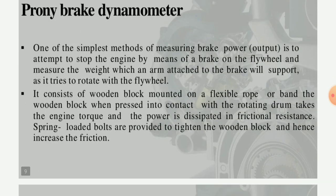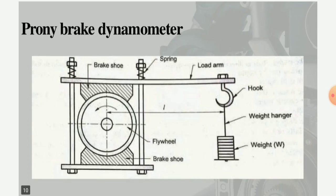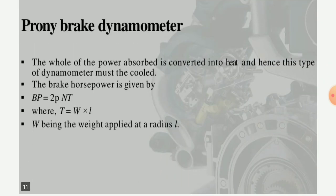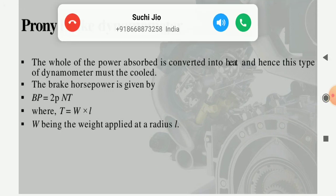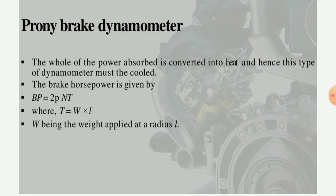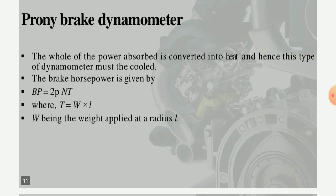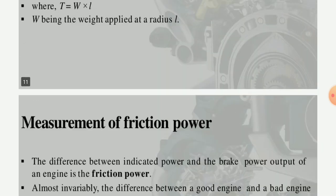Hence, the increase in the frictional resistance is produced. In the prony brake dynamometer visible on screen, weight hangers, hooks, and brake shoes are attached. In the prony brake dynamometer, brake power can be calculated with the formula BP = 2πNT, where the torque T is indicated by the weight W applied at radius length L.